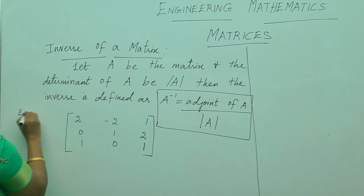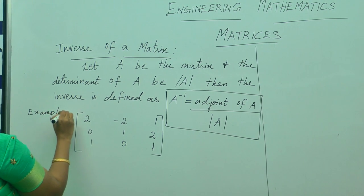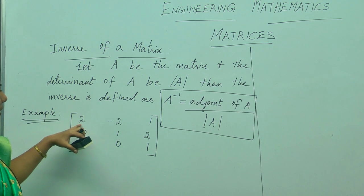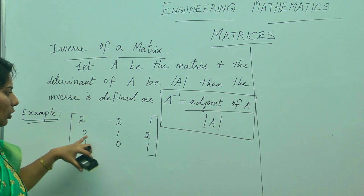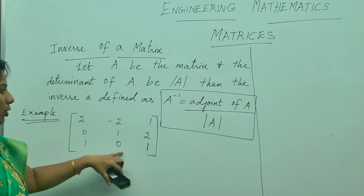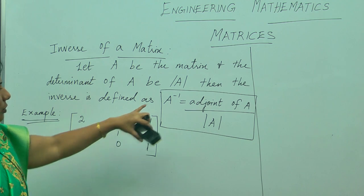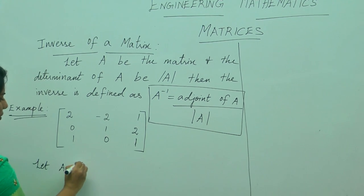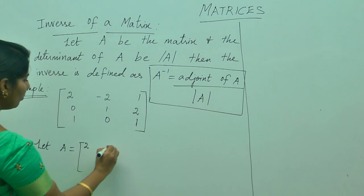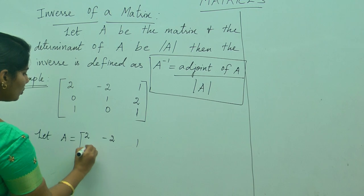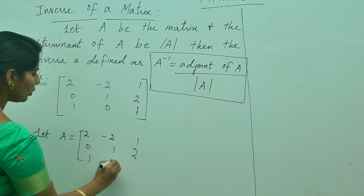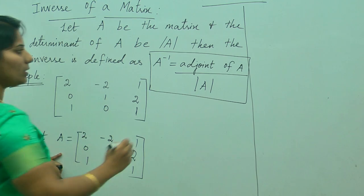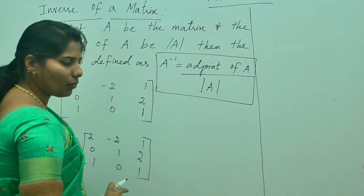For example, find the inverse for the matrix: 2, minus 2, 1; 0, 1, 2; 1, 0, 1. So, let the given matrix A equal to 2, minus 2, 1; 0, 1, 2; 1, 0, 1. What is the formula to find A inverse? Adjoint of A by determinant of A.